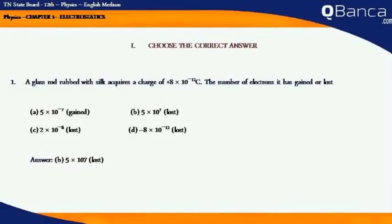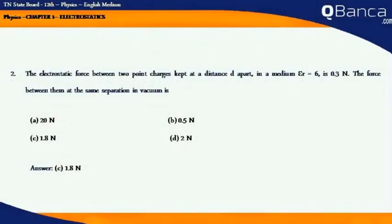The electrostatic force between two point charges kept at a distance d apart in a medium with epsilon r equal to 6 is 0.3 N. The force between them at the same separation in vacuum is. Answer: 1.8 N.